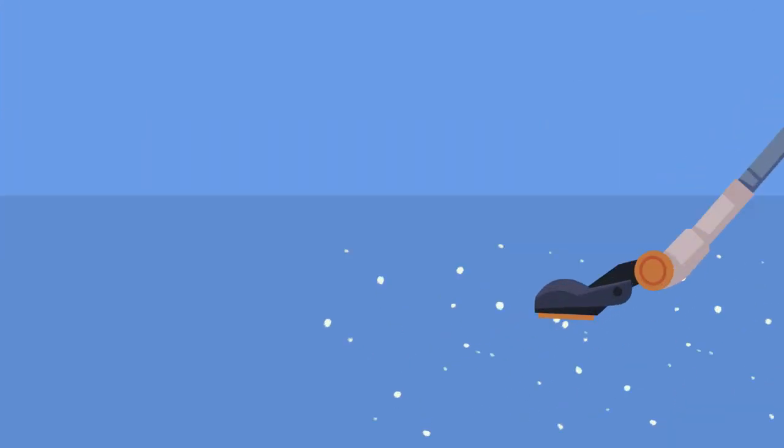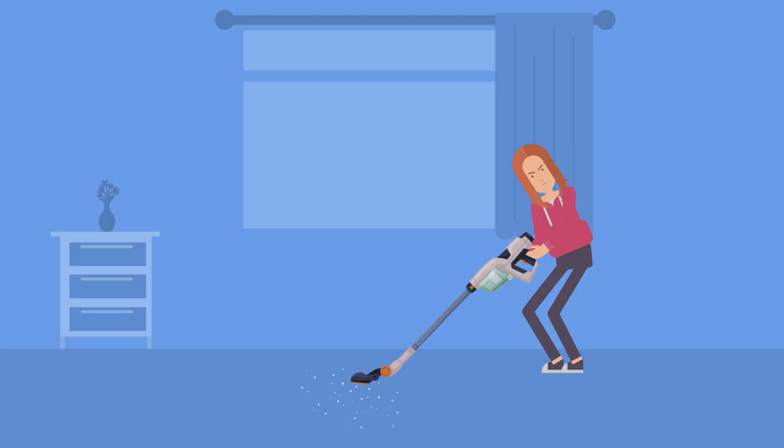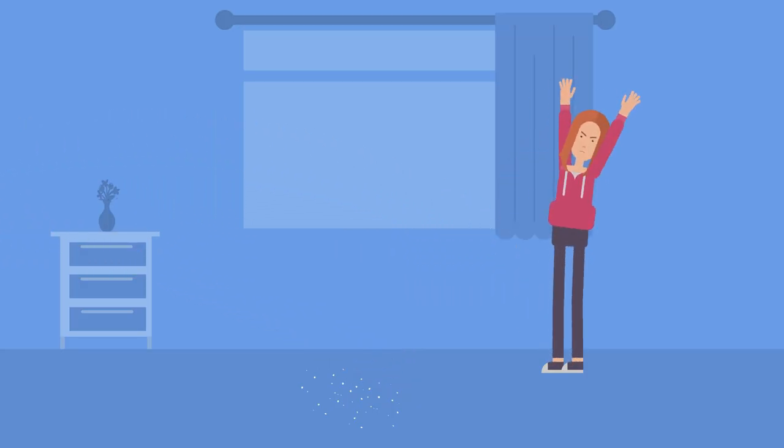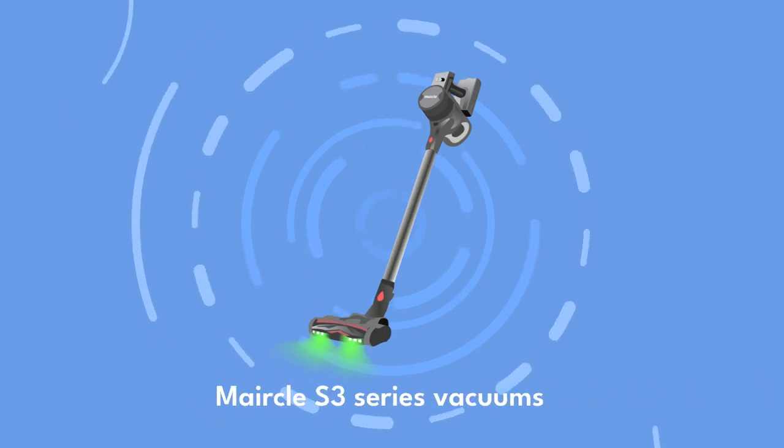Most vacuum cleaners are often blocked by the HEPA filter due to dust, leading to reduced suction power. But your vacuum cleaner doesn't have to be that way. Meet Miracle S3 series vacuums.